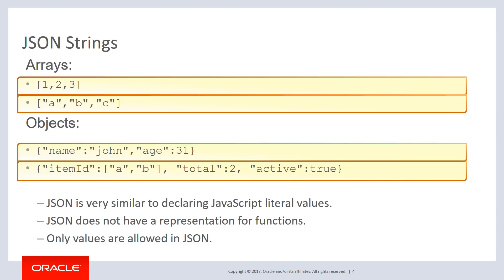A more complex example shows that a field can point to an array — as seen with the item ID field. Also notice the third field, active, has a value of true, which points out that you can use boolean values in JSON. One important note: you cannot put functions in JSON — it is purely a data storage format.